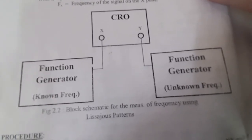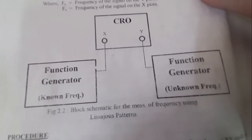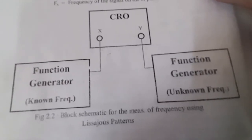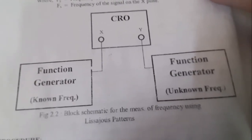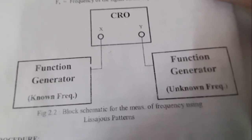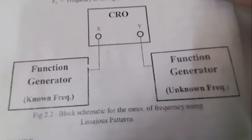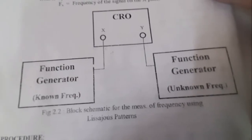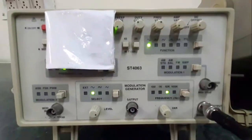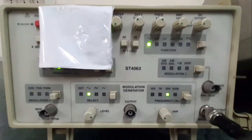The unknown frequency source — the frequency that you want to measure with the help of the Lissajous pattern — is applied to channel 1, which is the Y representation. The known frequency source or function generator is connected to X, which is the representation of channel 2.